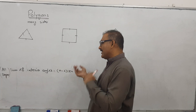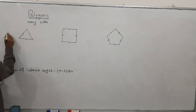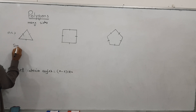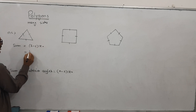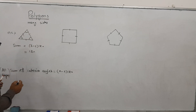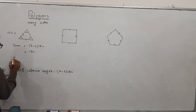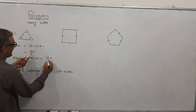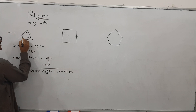So if you want to see — when I put 3 sides, N is 3. So 3 minus 2 into 180, we get 180. It means this angle plus this plus this equals 180. And if you need each angle, divide by the number of sides: 180 divided by 3 equals 60 degrees. So each angle is 60°.